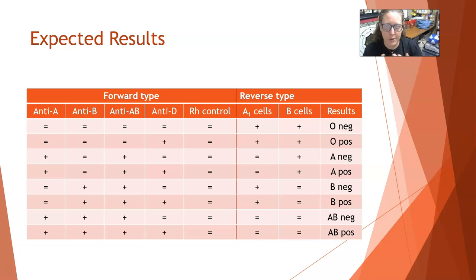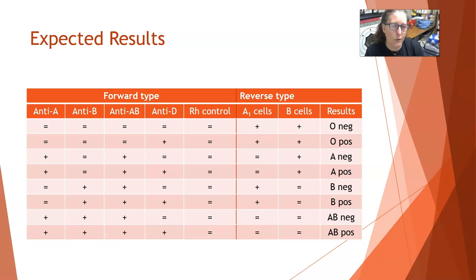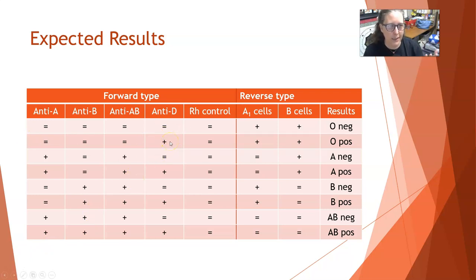Looking at the possible results: if forward type reactions with all antisera are negative and reverse type reactions against both A and B cells are positive, the patient is O negative. The only difference for O positive would be a positive reaction with anti-D, indicating the D antigen is present.